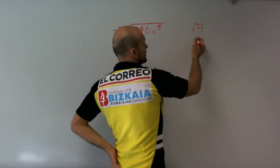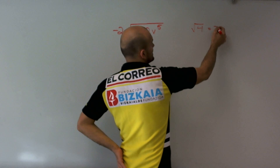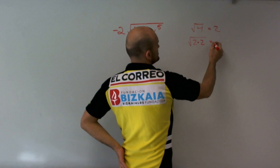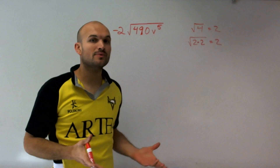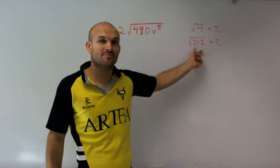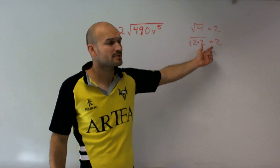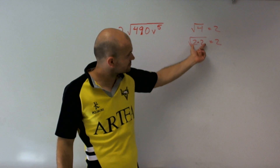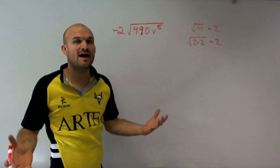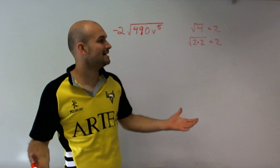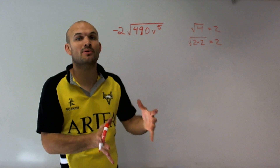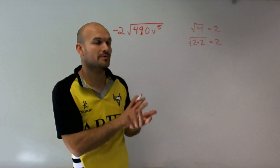If I take the square root of 4, we know the answer is 2. But I can rewrite the square root of 4 as 2 times 2. So whenever we have two factors that are the same, we can take the square root of them and get 2. I'm going to factor the terms under the square root, and any time I have a pair of factors, I can take that number or factor out of the square root.